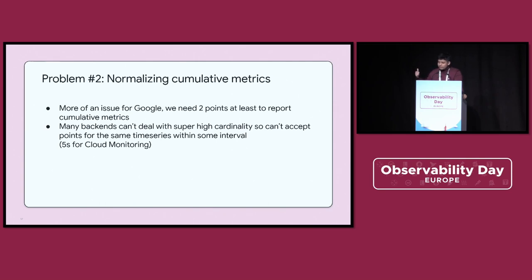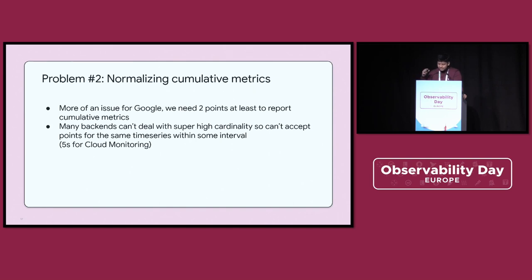The second problem is more of a Google problem. Our time series database, Monarch, doesn't allow cumulative metrics to be stored without start times. What that really means is we actually need two points to report the first cumulative point to our time series database, because we cache the first one and normalize every subsequent point with it. In serverless, this is tricky because we might not live long enough to actually have two successful scrapes, because instances die very quickly.